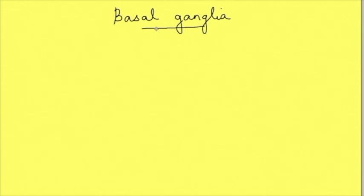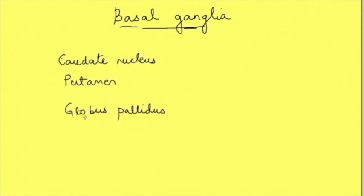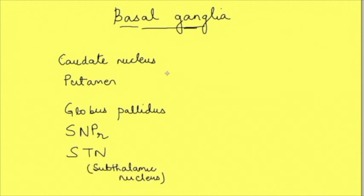Basal ganglia, as the name indicates, is a group of nuclei located at the base of the brain. These nuclei are: caudate nucleus, putamen, globus pallidus, substantia nigra pars reticulata, and subthalamic nucleus. So these five nuclei form the basal ganglia.